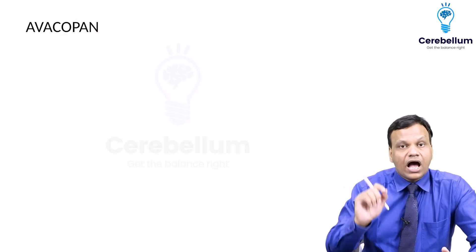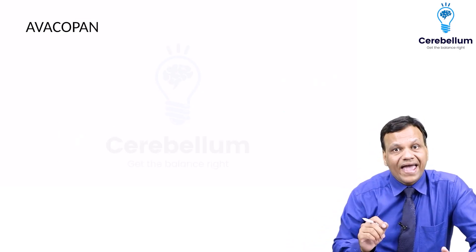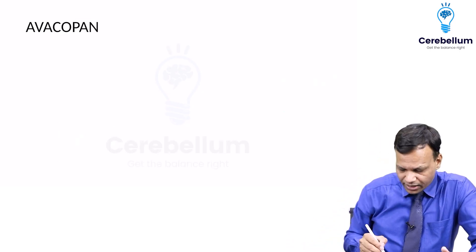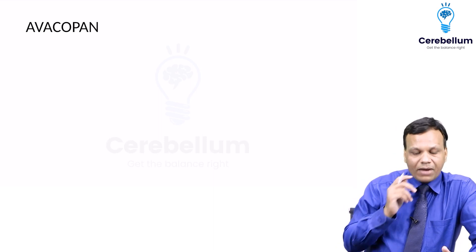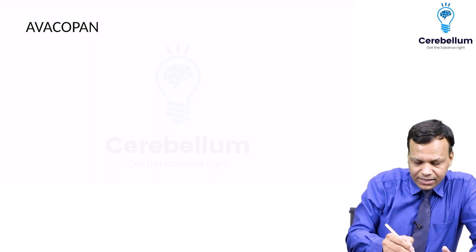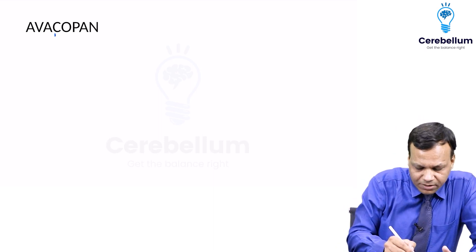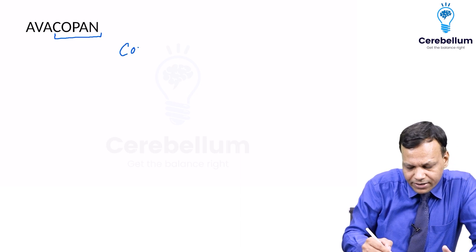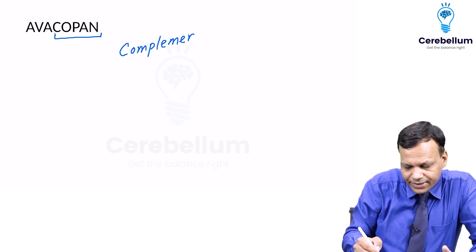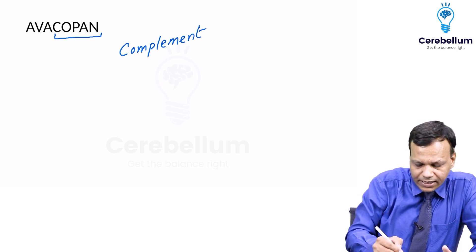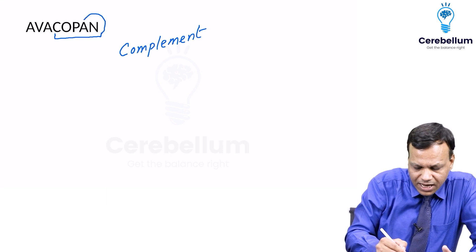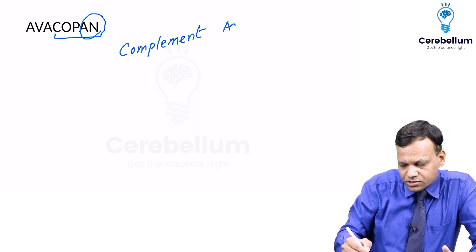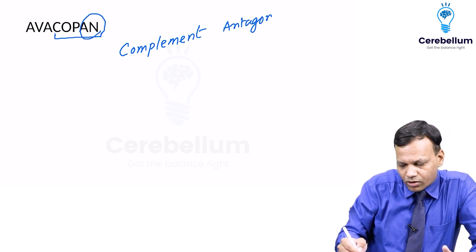The next drug is Avacopan. So what is Avacopan? The name tells us: 'copan' means complement, and 'an' means antagonist. So it is a complement antagonist.